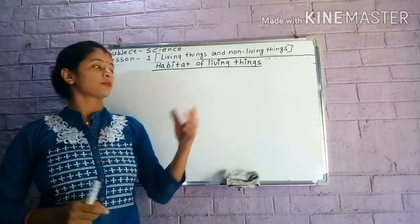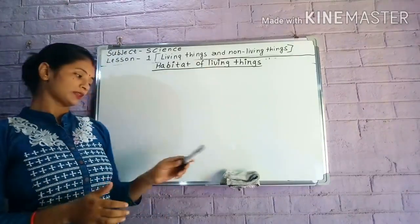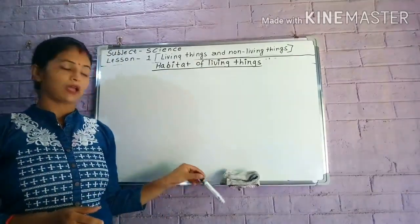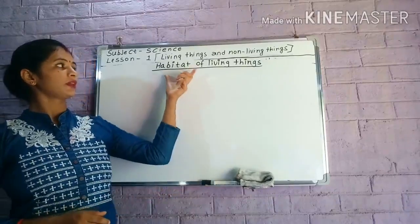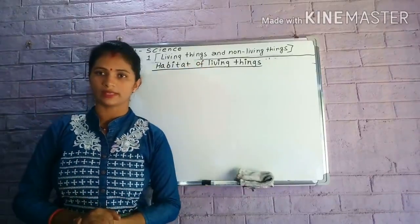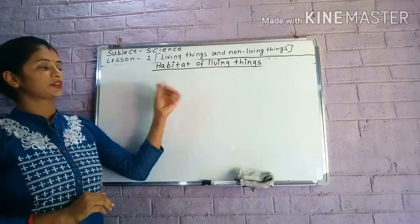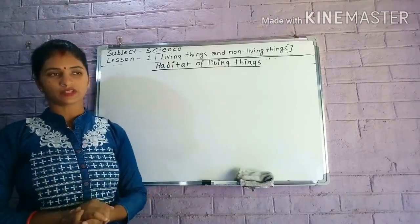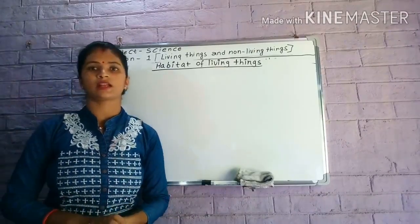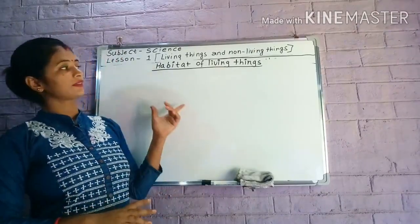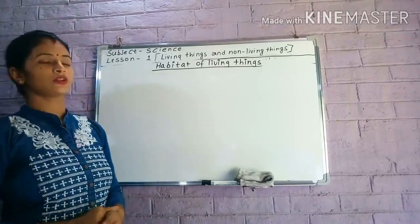Habitat of living things. Habitat means the living place of living things — where they get food, water, air, etc., and where they feel safe.